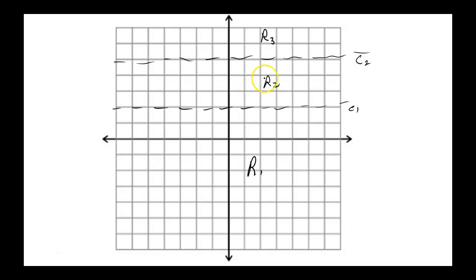By continuity of f, the sign of f(y) cannot change within a sub-region. Since dy/dx equals f(y), the derivative is either always positive or always negative in that region — the function is either strictly increasing or strictly decreasing. If y(x) is bounded above by a critical point, that critical point serves as a horizontal asymptote.